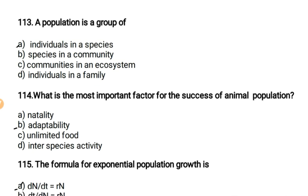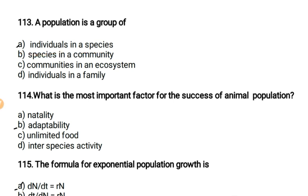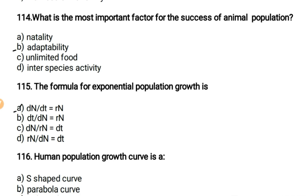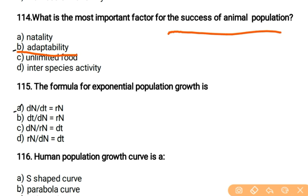A population is a group of individuals in a species. The most important factor for the success of animal population is adaptability. Without adaptability there is no success in animal population.